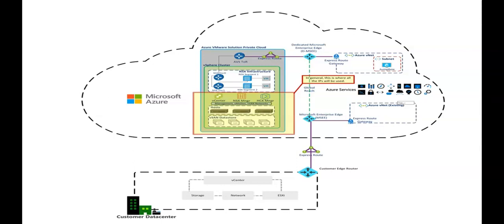To define the IP address segment for VM workloads: like any other VMware environment, VMs must connect to a network segment. As the production deployment of Azure VMware Solution expands, there is often a combination of L2 extended segments from on-premises and local NSX-T network segments. For the initial deployment, identify a single network segment — for example, 10.0.4.0. This segment is used primarily for testing purposes. The address block should not overlap with any other segments on-premises or within Azure, and should not be within the /22 management range.